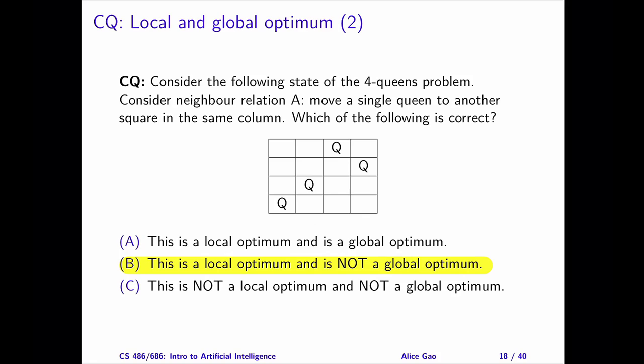This state is not a global optimum for the same reason as we discussed in question 1. Now, is this state a local optimum or not? Let's calculate the cost of all of the neighbors.